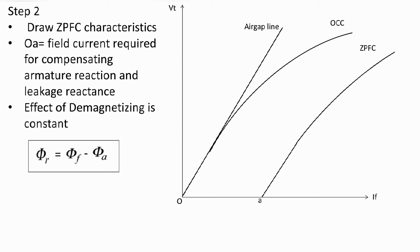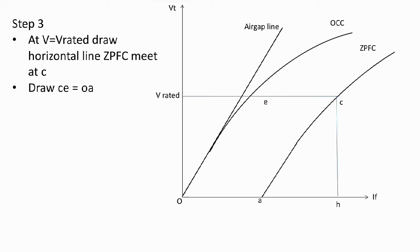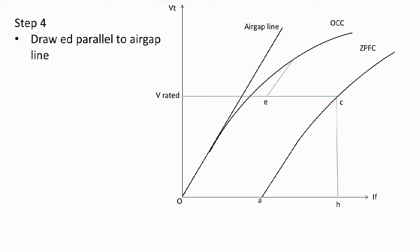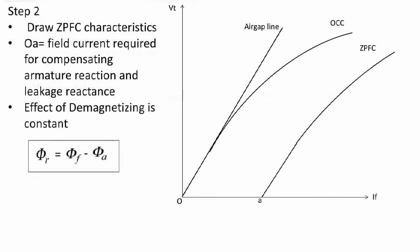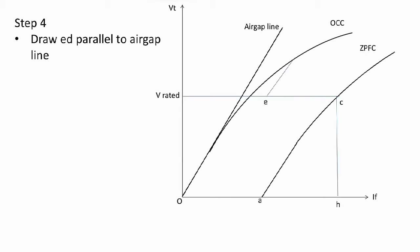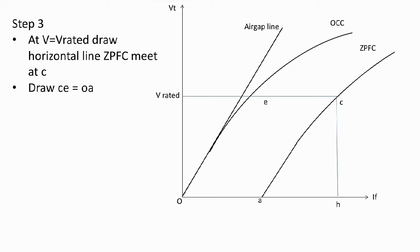Step three: at V = V_rated, draw a horizontal line and get point C on the ZPFC curve. Step four: from C, mark point E such that CE = OA. So EC = OA — this sets the horizontal shift equal to the field current needed to compensate armature MMF and leakage MMF.